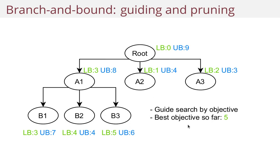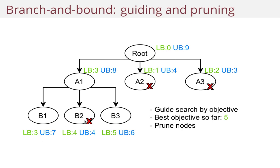But now we can make a really interesting observation — we can remove some nodes. Because we've also been keeping track of upper bounds, and the best objective is five. So if the upper bound of a node is three, you know you can't do better than three by expanding it further — but you already have five — so there's no reason to consider that node anymore. You can prune this away from the search. The same logic applies: if the upper bound is four and the best objective is five, you already know you can do better. That's how branch and bound works.